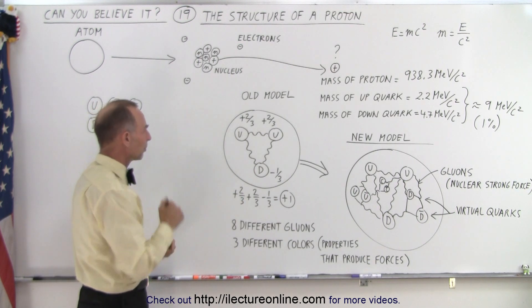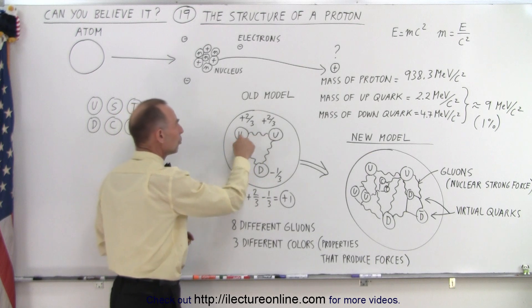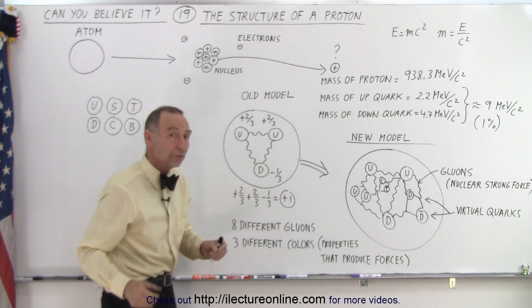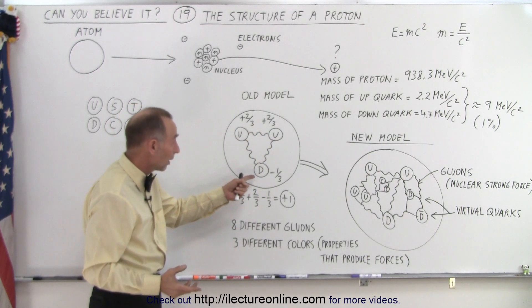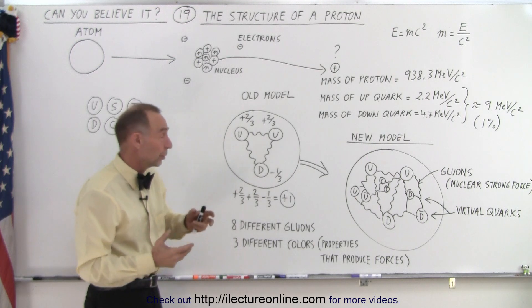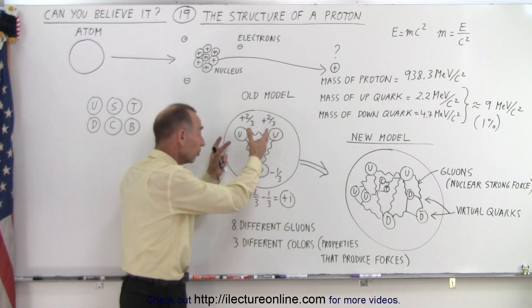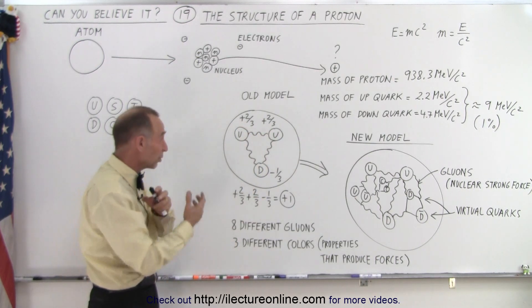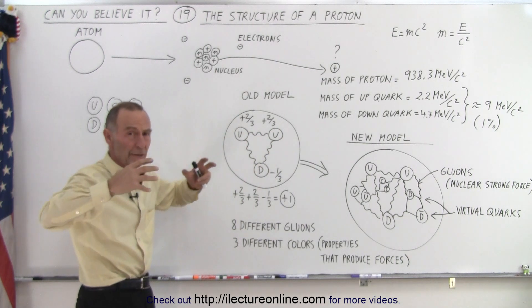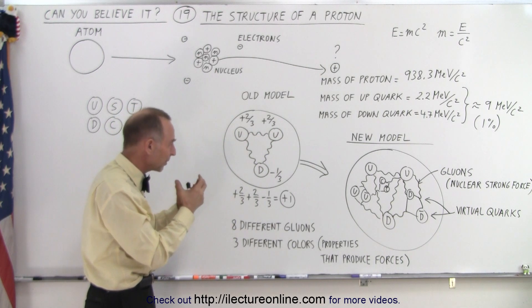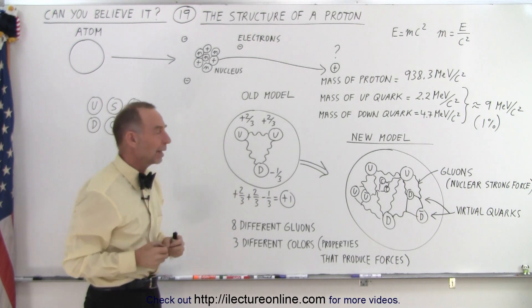But then there's a problem here. If we look at a proton and we look at the two up quarks, they both have a positive two-third charge, and even though there is a single negative charge of minus one-third, the repulsive forces of these up quarks really would kind of make them fly apart. They shouldn't be sticking together, so we knew there had to be something in there that would keep them together.